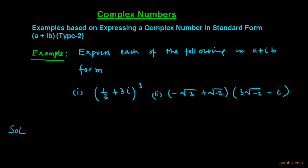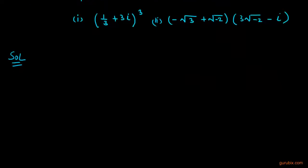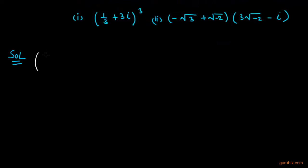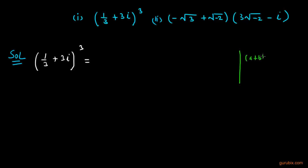Let us start with part 1. In part 1, we are given the expression 1 over 3 plus 3 iota, this whole value raised to the third power, and we can expand it by using the formula: the whole cube of a plus b is equal to a cubed plus 3a squared b plus 3ab squared plus b cubed.